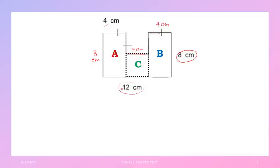Now you won't be confused about the dimensions. There is one more side — the sides of square C. Remember that figure C is a square, and when we say square, all sides have equal measurements. So if one side is 4 cm, then all sides are 4 cm.